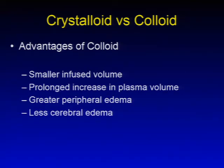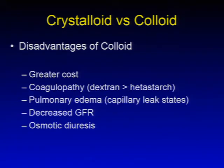Colloid solutions help expand the intravascular volume by remaining in the intravascular space. Synthetic examples include hetastarch and dextran, and natural examples include albumin and blood. Advantages of colloid include smaller infused volume, prolonged increase in plasma volume, and less cerebral edema. Disadvantages include greater cost, possible coagulopathy — dextran more commonly than hetastarch — pulmonary edema particularly with capillary leak states, decreased glomerular filtration rate, and osmotic diuresis.